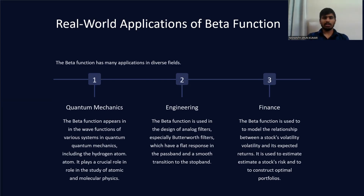In Bayesian statistics, the beta distribution is used as a conjugate prior for the binomial distribution, making posterior calculations more tractable. In image processing, the beta function has been used for tasks like image enhancement, image segmentation, and noise reduction.